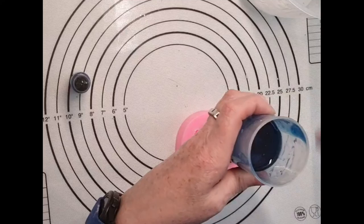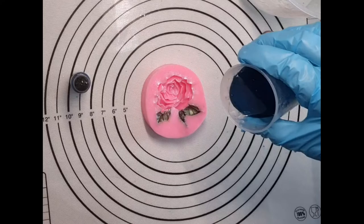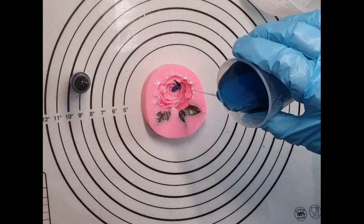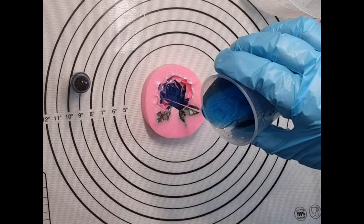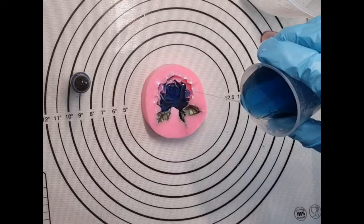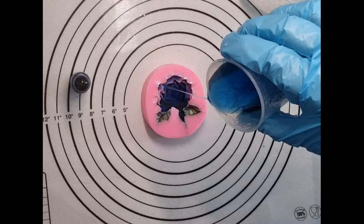All I'm going to do is from a height, very slowly, pour it in and hopefully get all the little nooks and crannies so I don't get no bubbles. I don't know what this is going to look like.